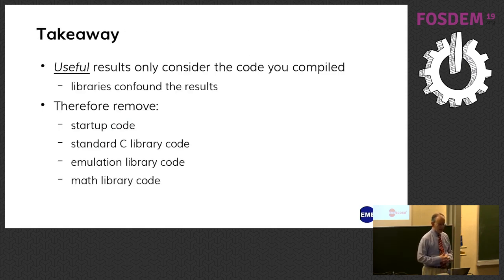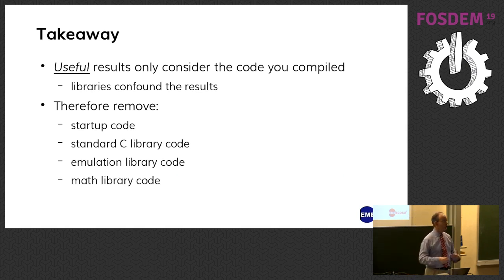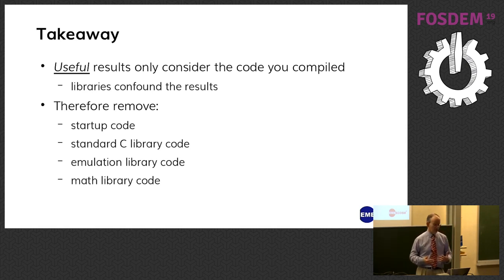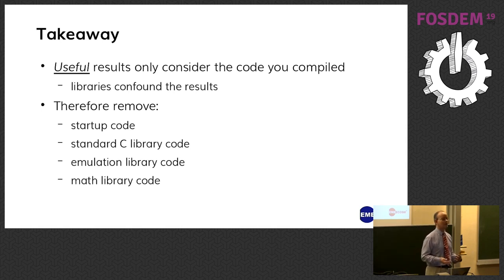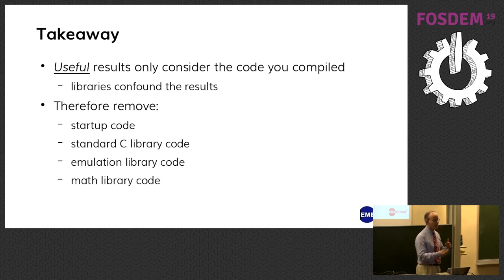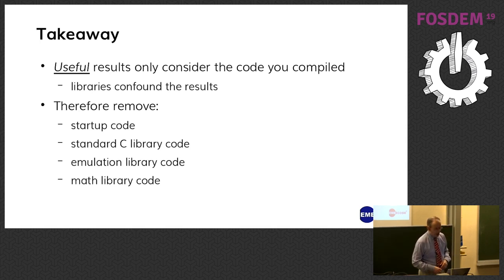The takeaway: useful results for compiler writers — only consider the code you compiled. Libraries and startup code confound the results. So remove your startup code, remove your C library code, remove your emulation library code, and remove your math library code. That's easy when you're only looking at code size. You have to actually try and remove the same factors when doing execution speed — that's a talk for next year — because it actually still has to work.